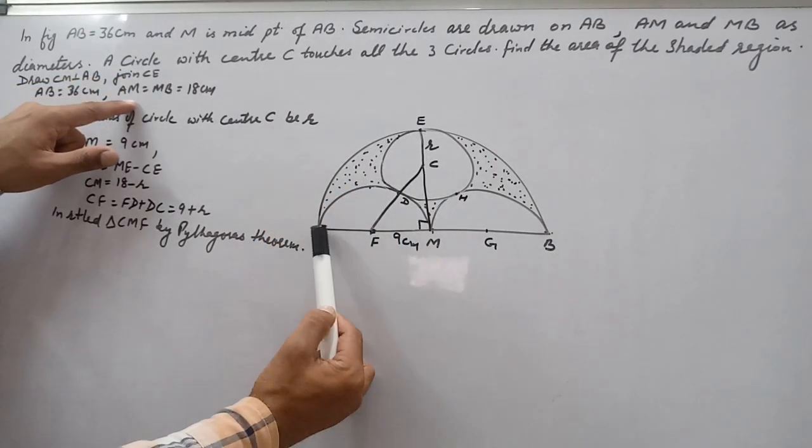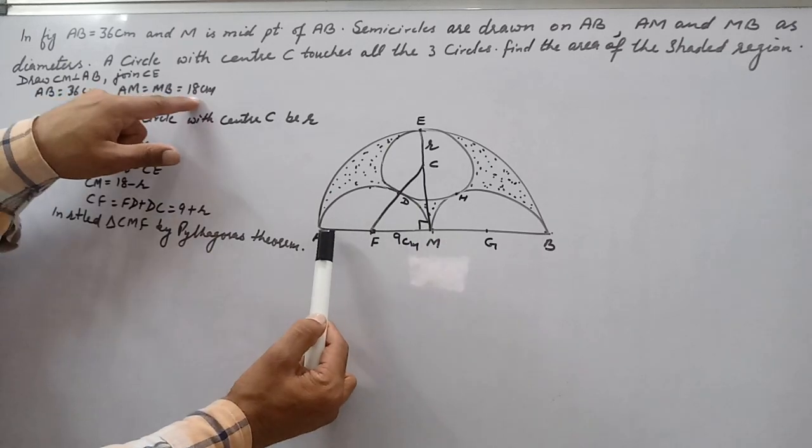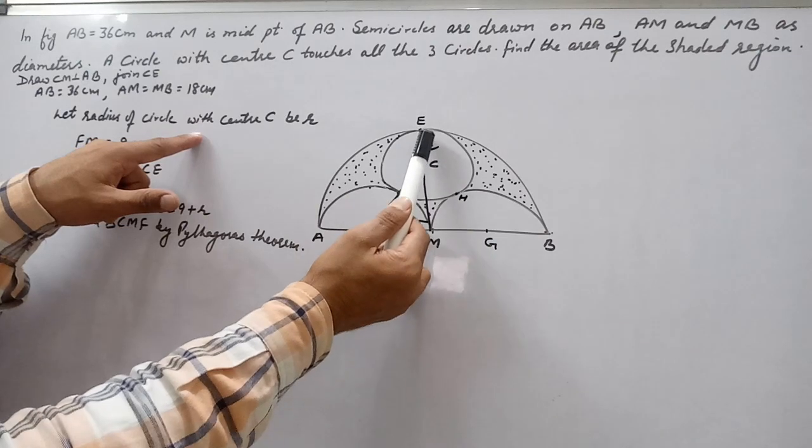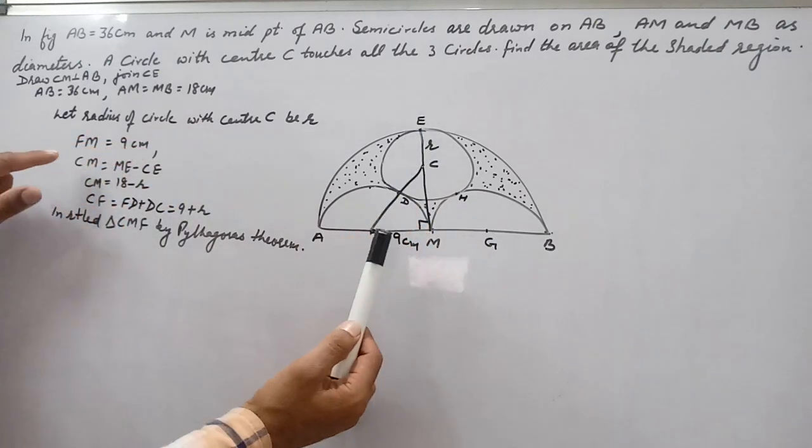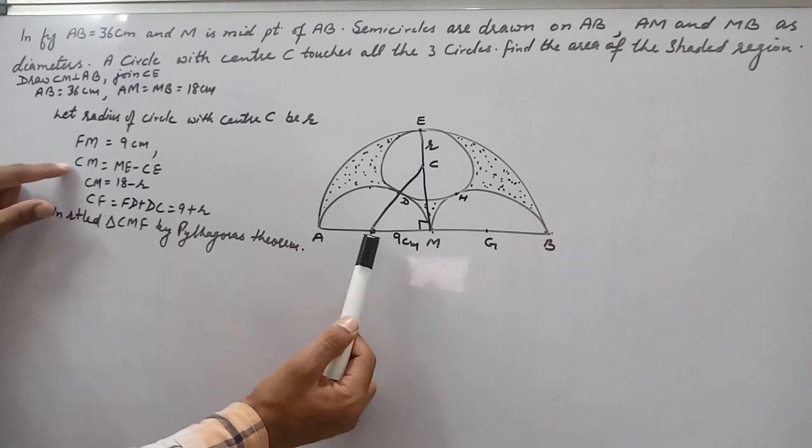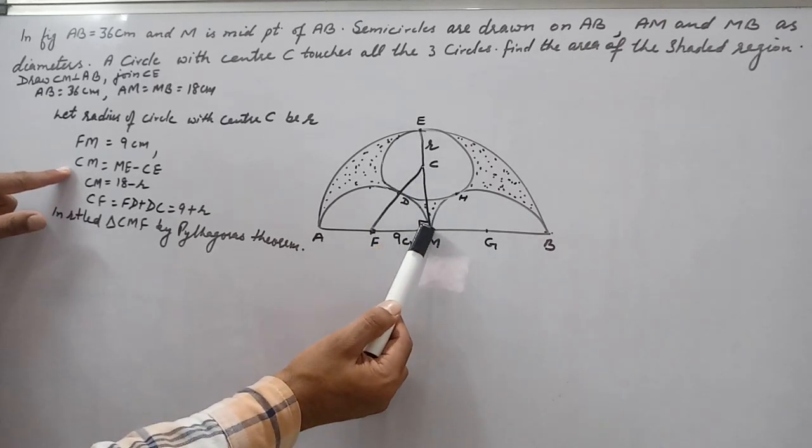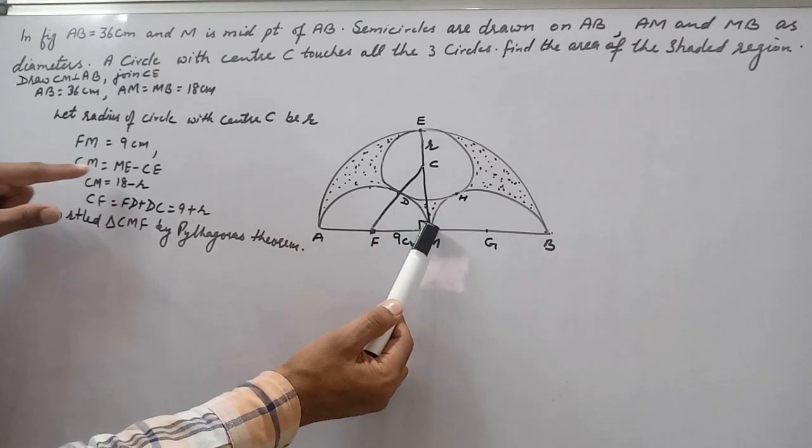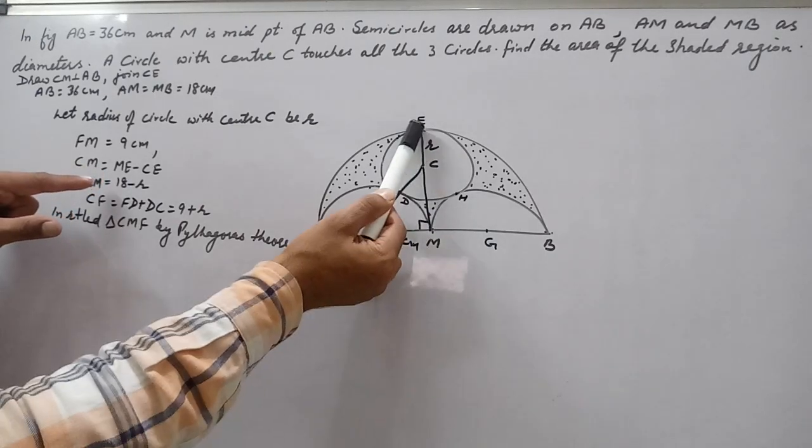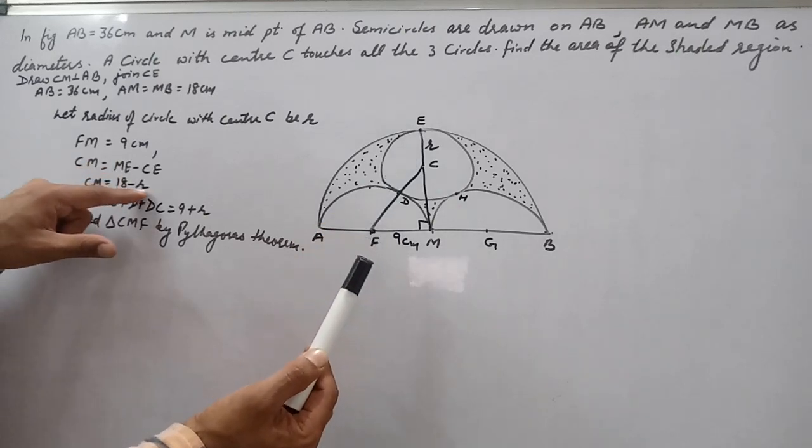Now AB is 36 centimeters. AM is half of 36, that is 18 centimeters, and radius of the circle with center C we have supposed is R. Now FM is 9 centimeters. CM will be ME minus CE. So ME is 18 and CE is R, so CM is 18 minus R.